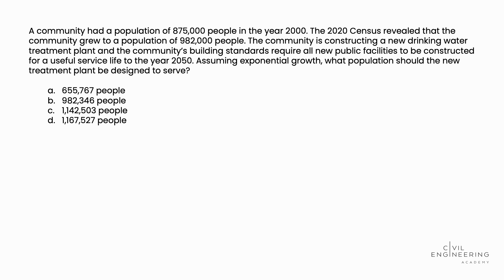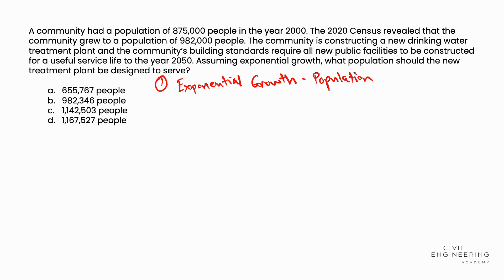If we take a look at this problem, we tackle it in two steps. We turn to the P.E. Reference Handbook, to the population projection equations, which are in the water resources and environmental section. Specifically, we look at the exponential growth equation for population projections. That's in the P.E. Reference Handbook, in the water resources and environmental section. We're told in the problem statement that we have exponential growth.